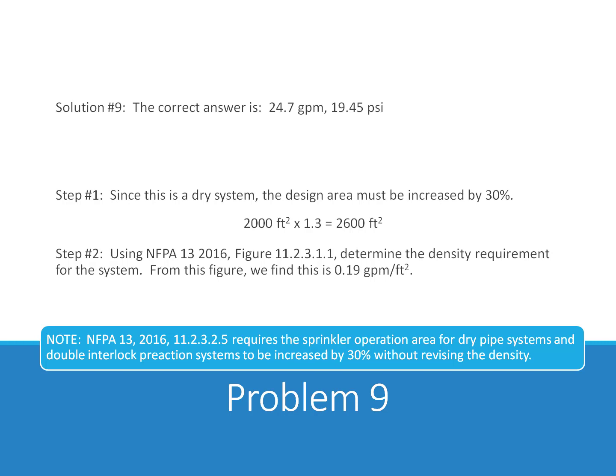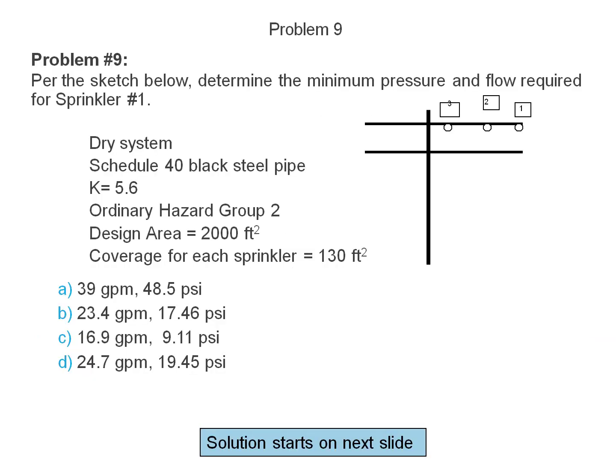Step 2. Using NFPA 13, 2016, figure 11.2.3.1.1, determine the density requirement for the system. From this figure, we find this is 0.19 gallons per minute per square foot. Per this sketch, determine the minimum pressure and flow required for sprinkler number 1.